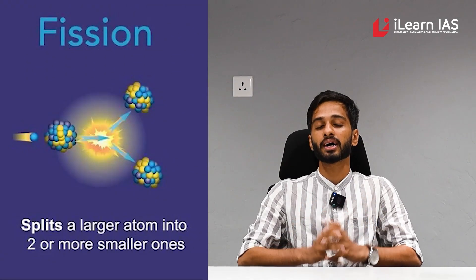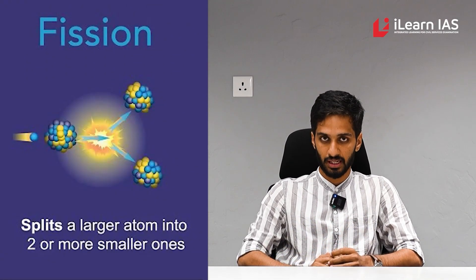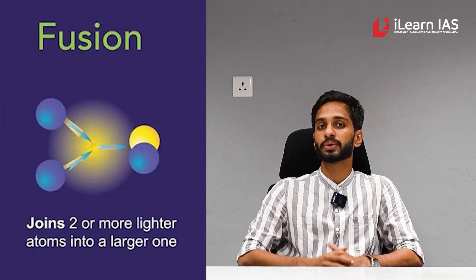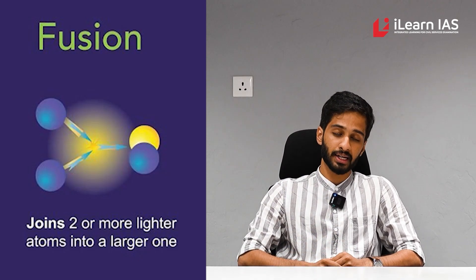Nuclear fission is when one large atom splits into two smaller atoms, releasing nuclear energy. In nuclear fusion, two smaller atoms combine together to form a larger atom, and energy is released in that process. Nuclear fusion is what happens in the sun — that is how the heat of the sun is generated.